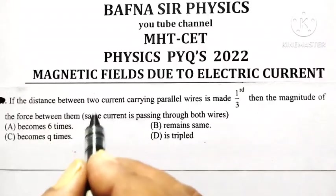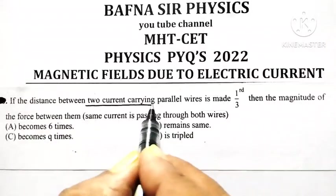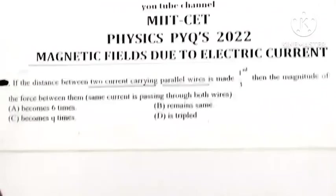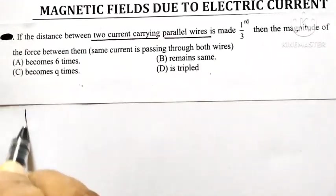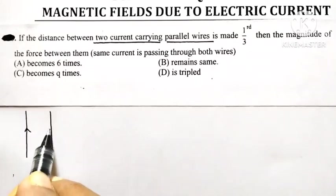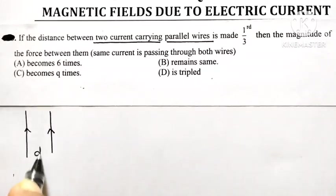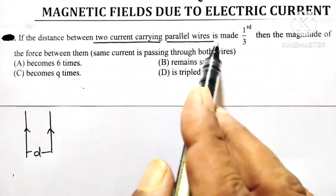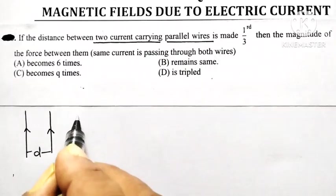If the distance between two current-carrying parallel wires is made one-third, let us consider that initially the two current-carrying parallel wires are separated by a distance d.